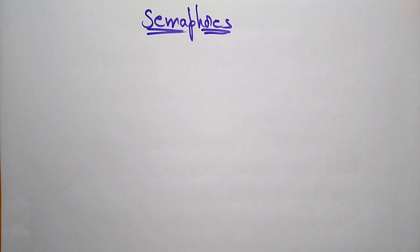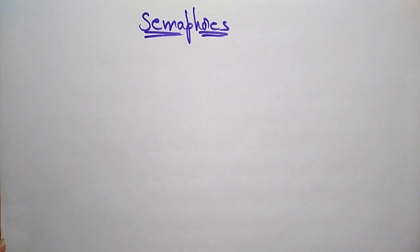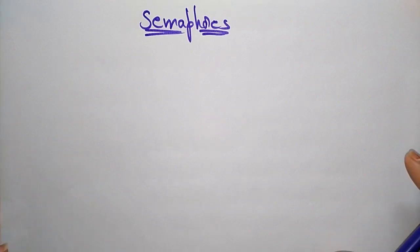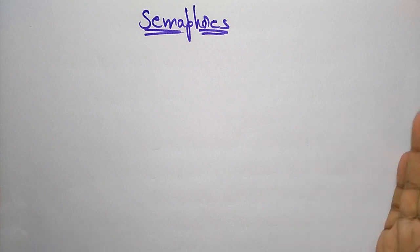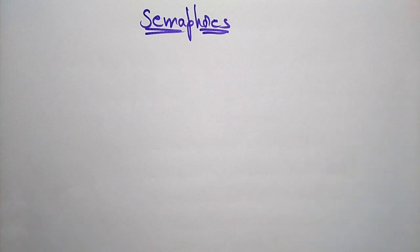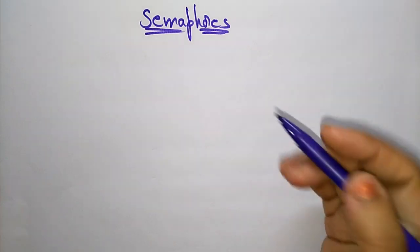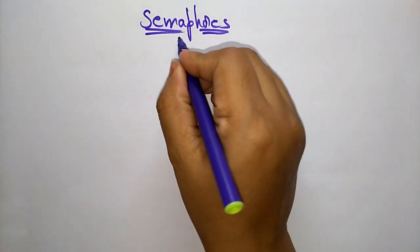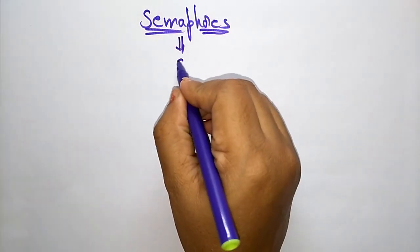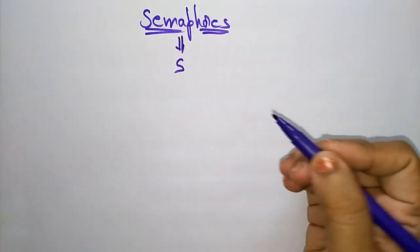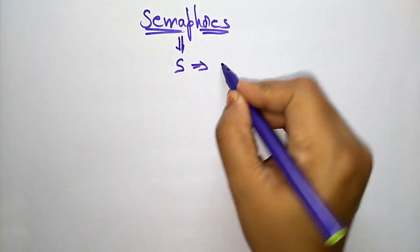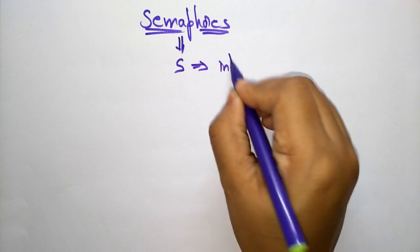Hi students, coming to the next topic in the subject operating system: semaphores. The semaphore is one of the important topics in operating systems. Semaphore is nothing but an integer variable, represented as the variable S. This is simply an integer variable.